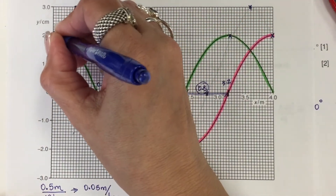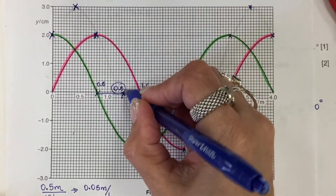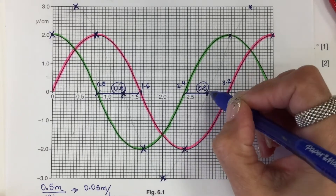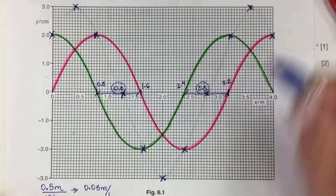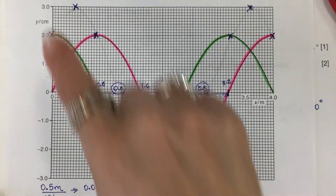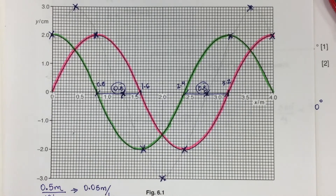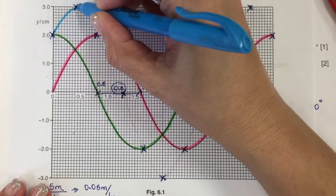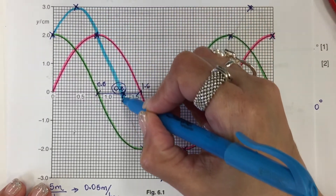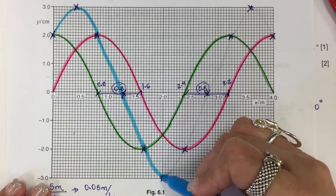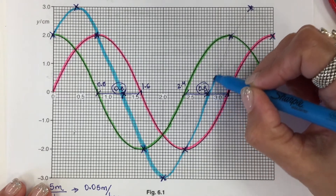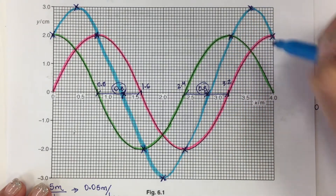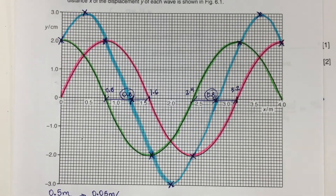Mark all the calculated points: 1, 2, 3, and the corresponding points along the curve. Now connect all those points and that will be the resultant wave, drawn here in blue. The shape should be about the same shape as both the pink and the green waves. I applied the principle of superposition to obtain the blue wave, which is the result of the pink and green waves overlapping as they travel in the same direction.